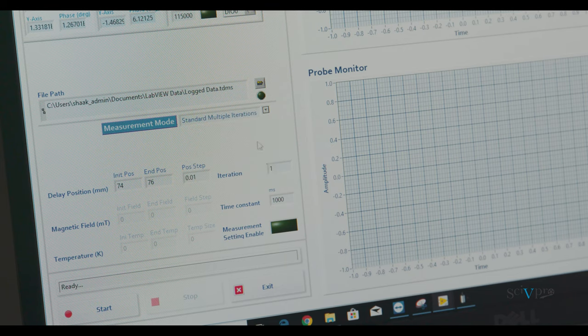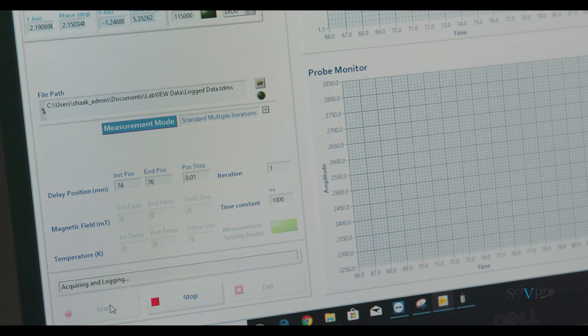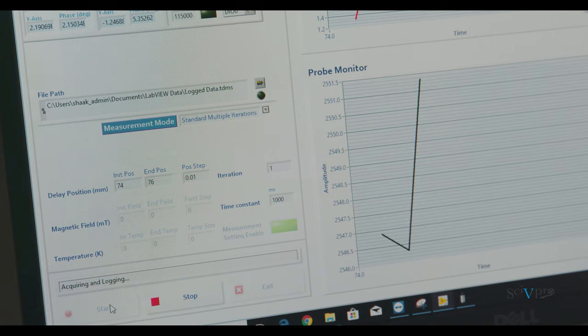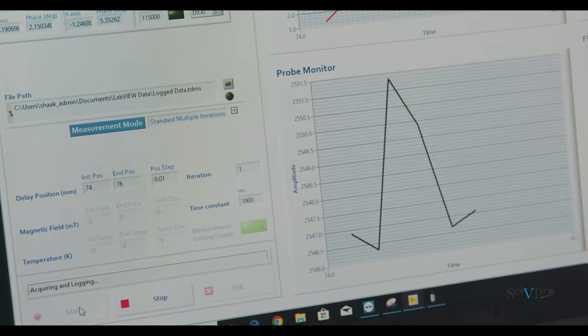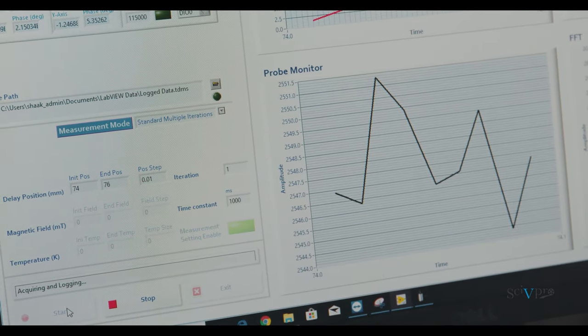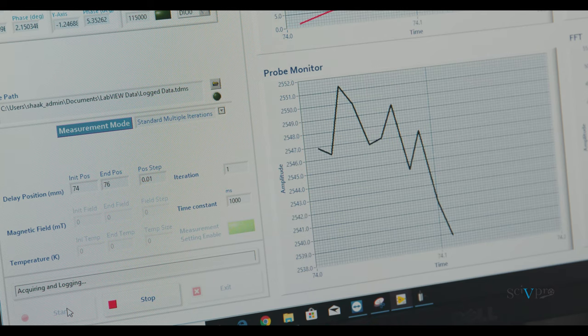To start a new measurement, select standard multiple iterations from the terahertz time domain spectroscopy control software. Click on measurement setting enable and press start. The probe monitor represents the probe pulse used for the electro-optical sampling. The probe must be stable, with a maximum deviation of 1% from the baseline.